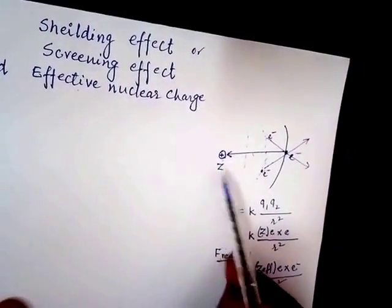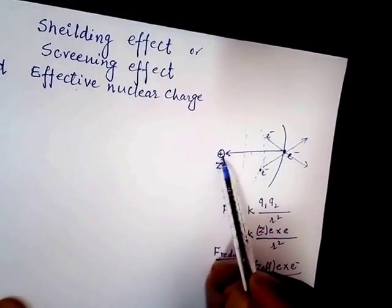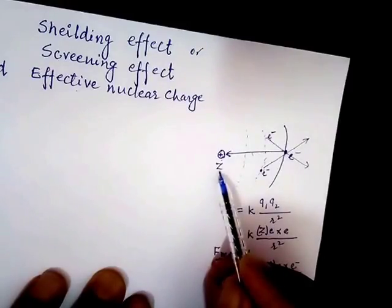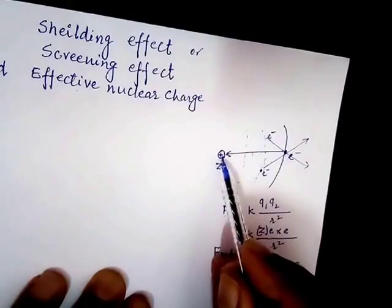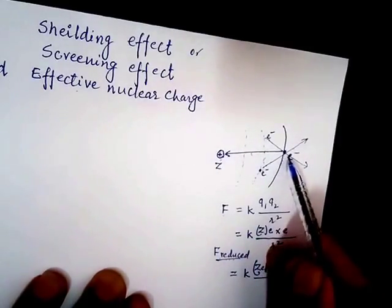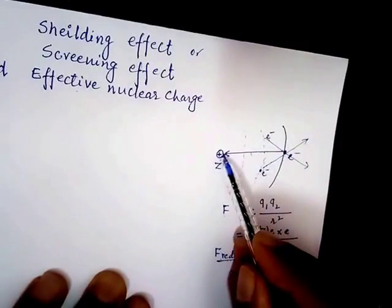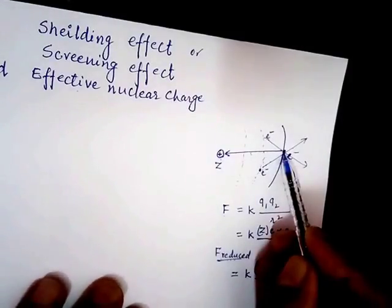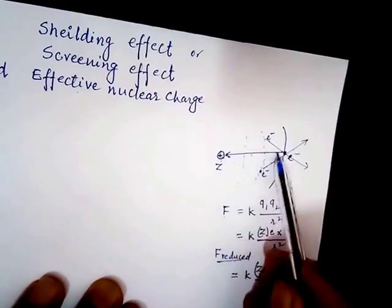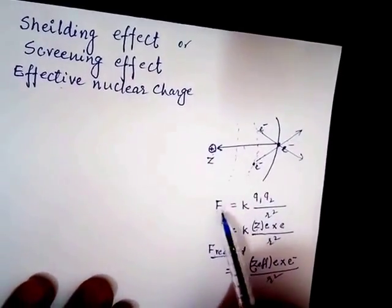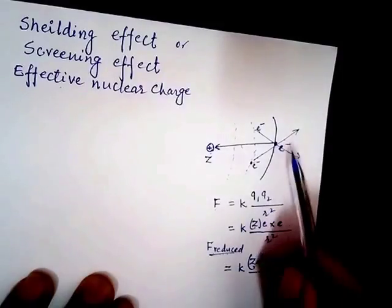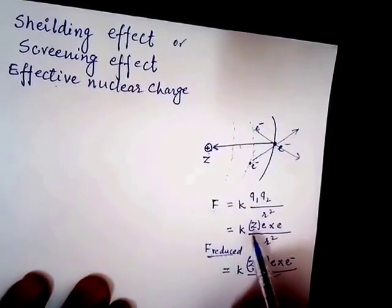In this model, this is the nucleus, and it has a nuclear charge represented by Z, which is equal to the atomic number — that is, the number of protons. The charge on the nucleus is positive. This is the valence electron. The force of attraction acting between the nuclear charge and the valence electron is attractive in nature, acting inward towards the nucleus, and it may be calculated using Coulomb's law: F = k·q1·q2/r², where q1 is the charge on the nucleus and q2 is the charge on the electron.